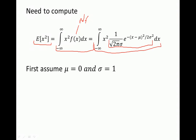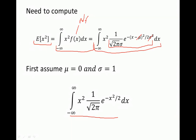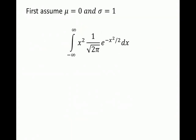In order to compute this complicated integral, let's first assume that mu is 0 and sigma is 1. We will have a simpler looking integral. In order to compute this integral, we can use integration by parts.